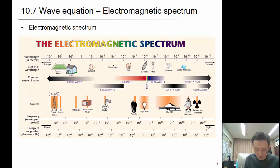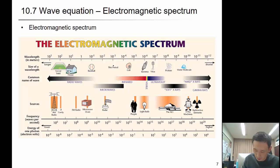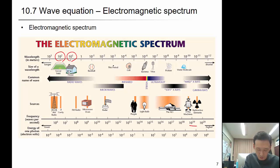In the electromagnetic spectrum, the wavelength changes with the frequency. For example, X-rays have a wavelength of about 10 to the negative 11 meters, with a frequency of about 10 to the 19 or 10 to the 20 hertz. Radio waves that we listen to have a wavelength of about 10 to the 1 to 10 to the 2 meters.